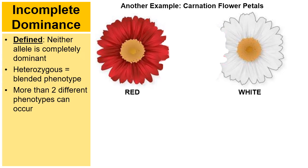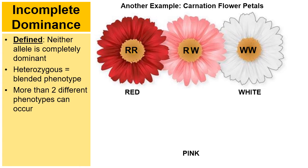Let's look at another example of incomplete dominance, this time with flowers. Carnations are a great example. Red is a purebred homozygous color. White-petaled carnations are also a purebred homozygous combination. So what happens if the next generation inherits one red allele and one white allele? The colors blend and the offspring would appear pink.